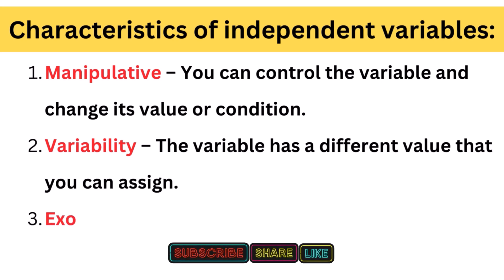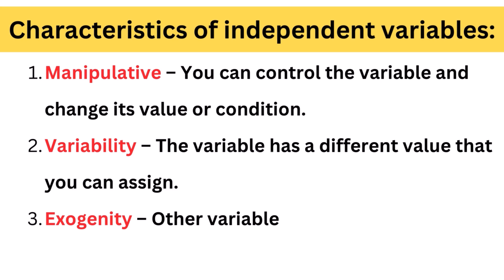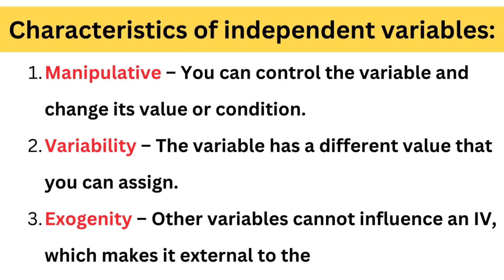Variability: The variable has a different value that you can assign. Exogenity: Other variables cannot influence, which makes it external to the research subject.